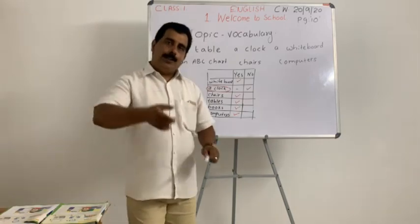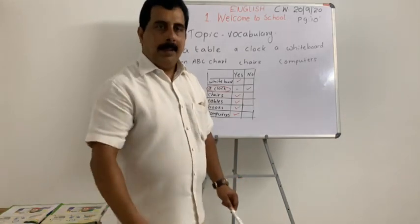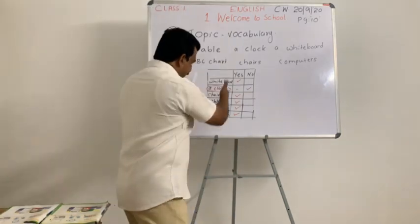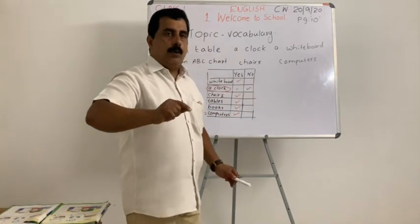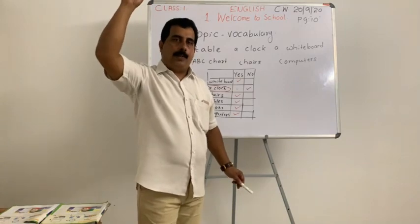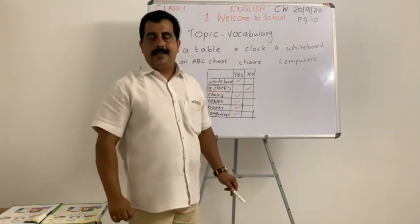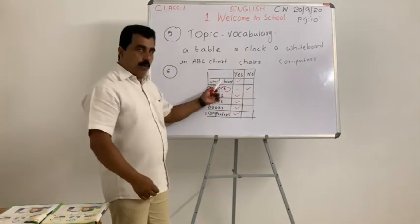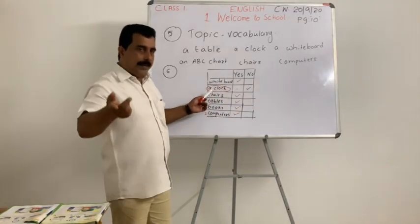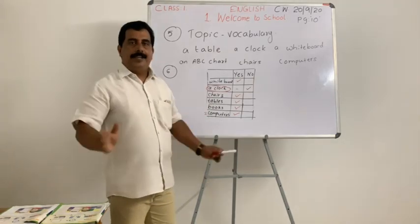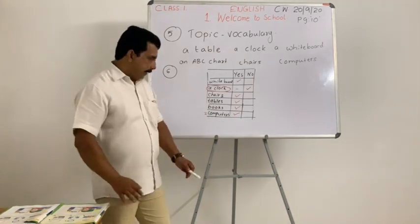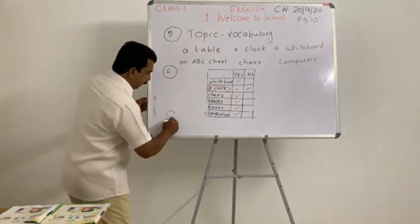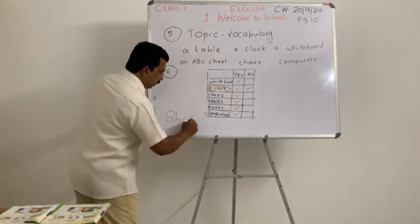So Matthew's classroom has chairs, tables, books, two computers, and a whiteboard — but he forgot to say a clock. Now you — make your own treasure hunt! Take a paper, write the things in your classroom, and tick yes or no. Think back to when you were in KG2: a whiteboard, a clock, chairs — write yes or no. Very good, boys!